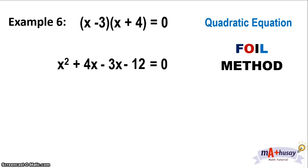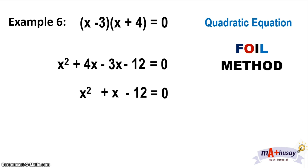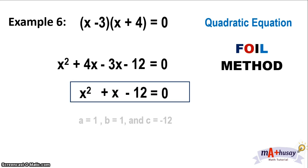We combine like terms: 4x and negative 3x combine to give positive x. So we have x squared plus x minus 12 equals 0. This factored form, x minus 3 times x plus 4, is now written in standard form as x squared plus x minus 12 equals 0, where A is equal to 1, B is equal to positive 1, and C is equal to negative 12.